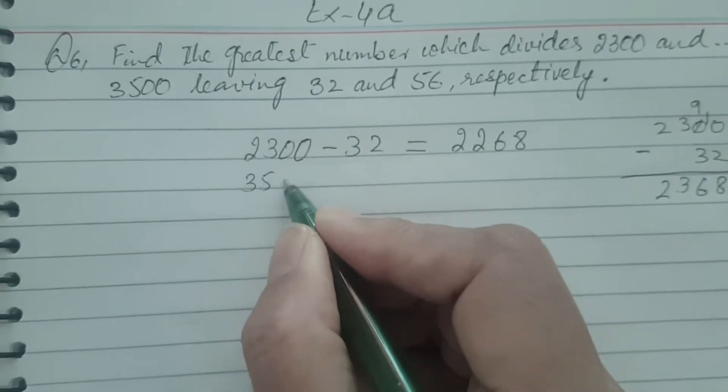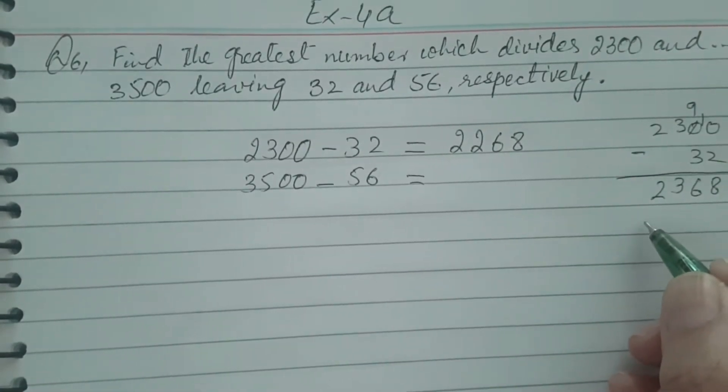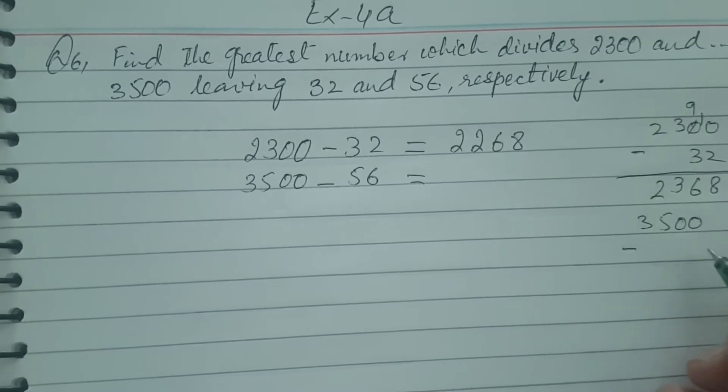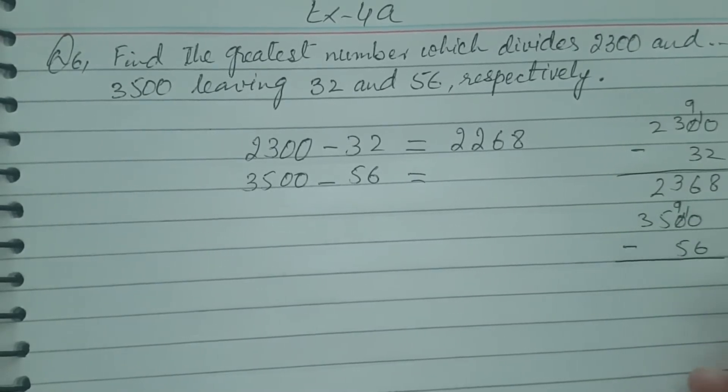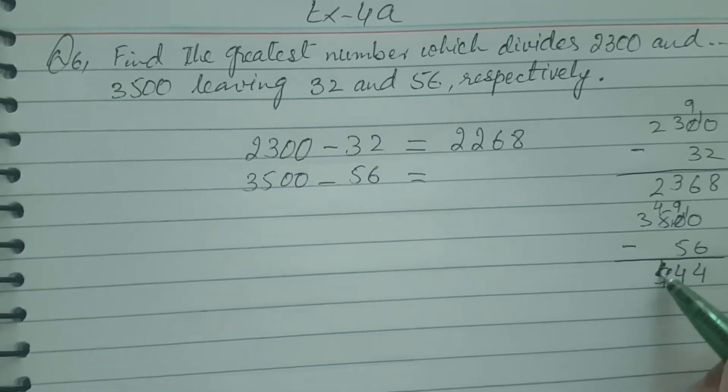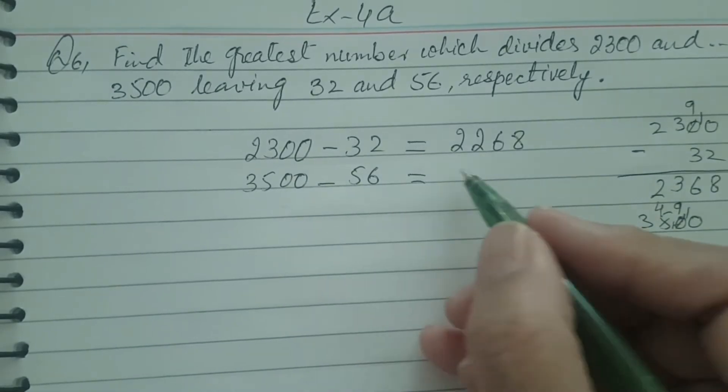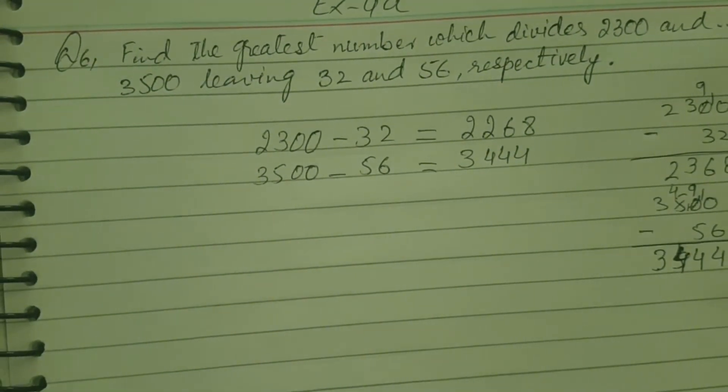The next number is 3500. Its remainder is 56. Do the subtraction: 10 minus 6 gives you 4, 9 minus 5 is 4. Here 4 is left over. You carry 1 from the 4 and make it 10, then 9, then 1. So 4 is here and 3 in the end. 3444 is the number when you subtract 56 from 3500.